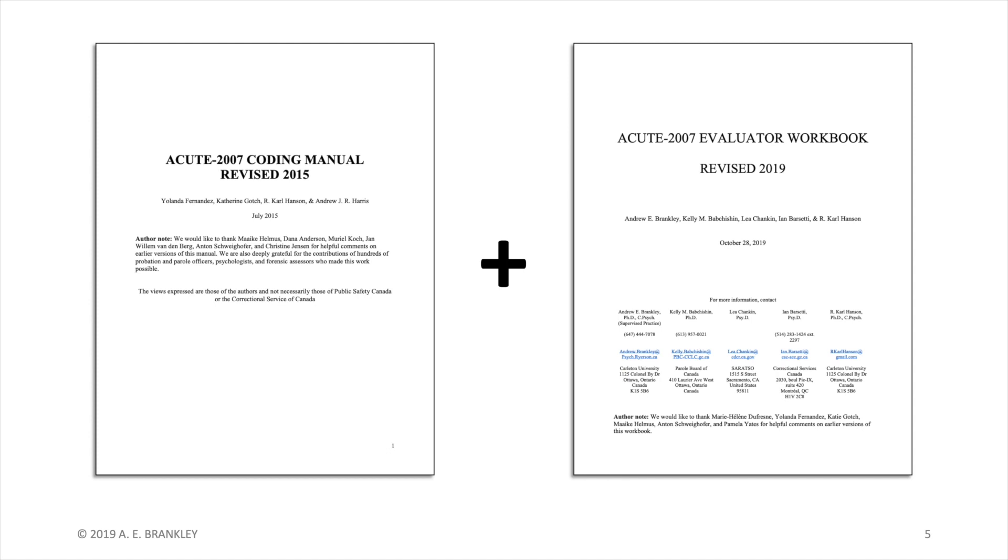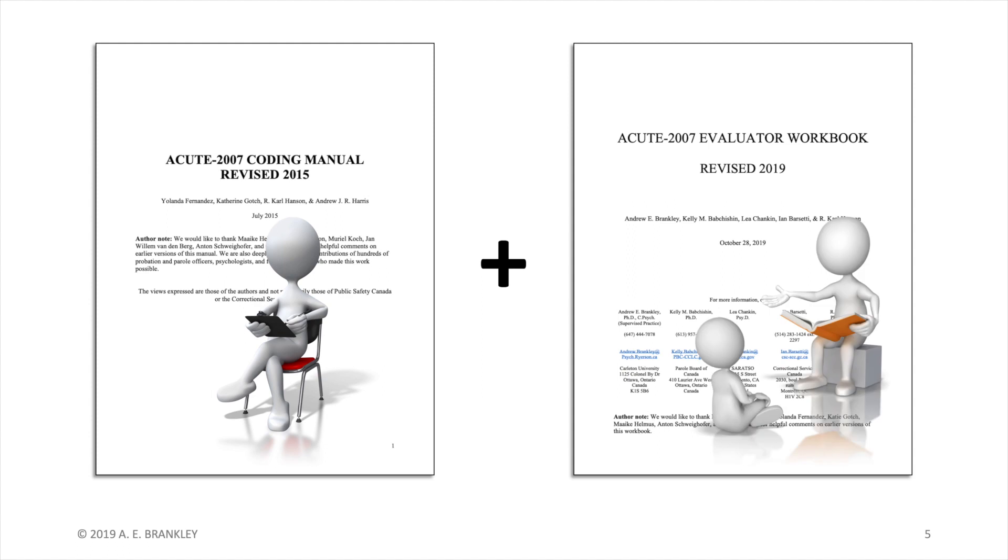The Evaluator Workbook is meant to be used with the 2015 version of the coding manual. I sometimes get asked, why do we have two separate manuals for one tool? The manual is like computer hardware—it provides rules to scoring the tool. Updating the coding manual, like buying a new computer, is an intensive process and should happen infrequently. The Evaluator Workbook, on the other hand, is like software. It allows you to interpret and communicate what was done in the coding manual. Regular updates of software are expected and allow evaluators to get the most out of their coding manuals.